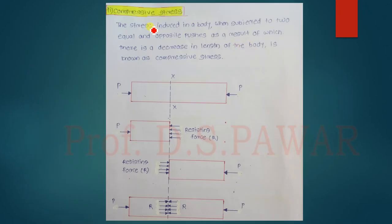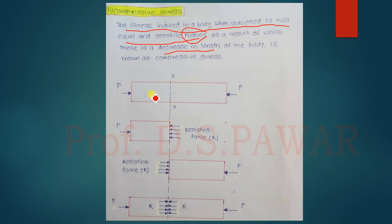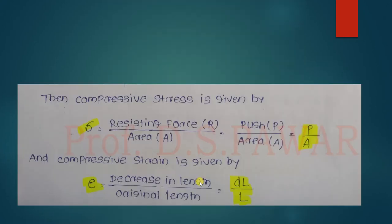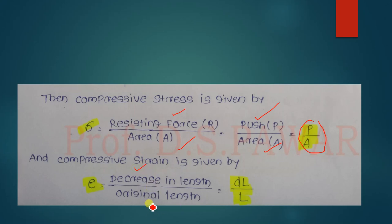Compressive stress is the stress induced in the body when subjected to two equal and opposite push forces, as a result of which there is a decrease in length. The resistance acts opposite to the push force. Compressive stress sigma = P / A, and compressive strain = decrease in length divided by original length = dL / L.